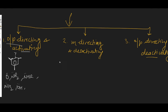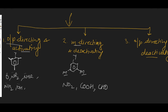In the meta-directing category, the substituent directs the incoming electrophile to the meta position, and along with this, it deactivates the ring — it decreases the rate of the further reaction. Examples include compounds that have a pi bond, such as NO₂, COOH, CHO, and C=O groups. All of these are meta-directing and deactivating groups.